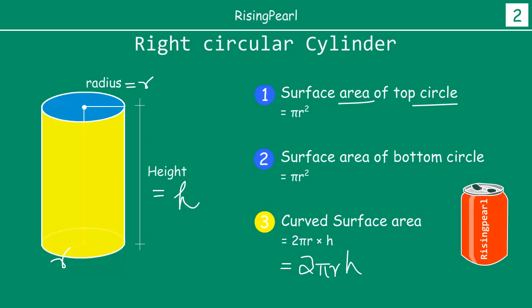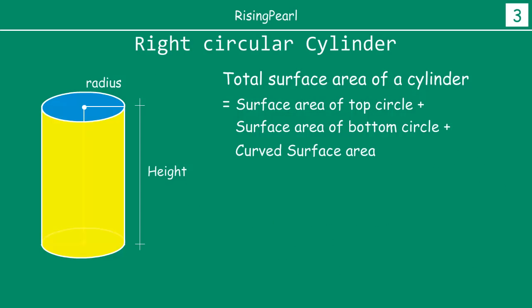So now if you were to put it together, the total surface area of any right circular cylinder will be surface area of the top circle plus surface area of the bottom circle plus the curved surface area. So if you add the 2 blue areas and the yellow area, you are going to get the total surface area of the cylinder.